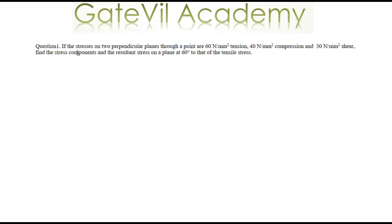Hello friends, in this lecture we will solve a numerical problem on compound stress. If the stress on two perpendicular planes through a point are 60 Newton per mm square and 40 Newton per mm square — one is tensile stress, one is compressive stress — and we have a shear stress of 30 Newton per mm square, we have been asked to find the stress components and the resultant stress on a plane inclined at 60 degrees to the plane that has tensile stress.